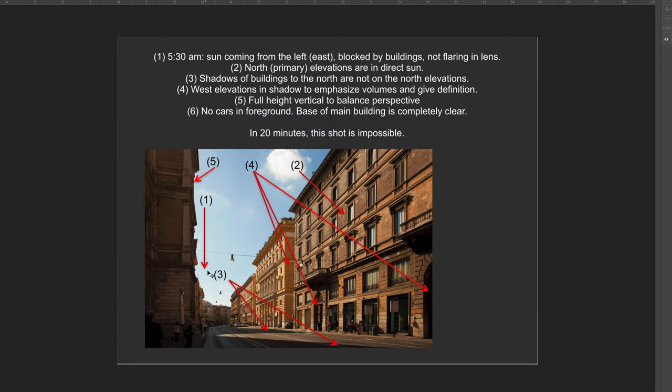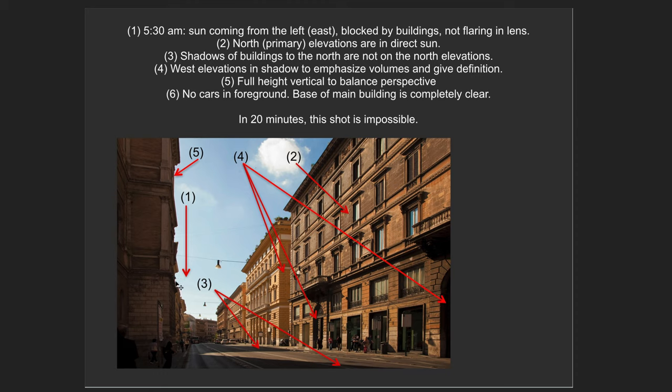First of all, the sun is coming from this direction. It's coming from the left, coming from the east. These buildings are blocking the sun from getting in my lens so I don't have any flare.